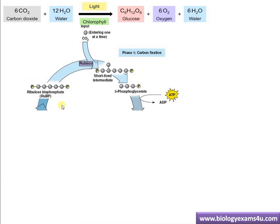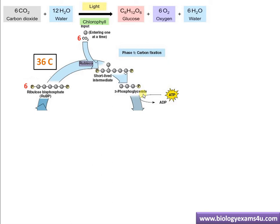Step one is carbon fixation. The initial substrate is ribulose bisphosphate (RuBP), a five-carbon compound with two phosphate groups. Using the equation: 6 CO₂ reacts with 6 RuBP in the presence of the enzyme RuBisCO — ribulose bisphosphate carboxylase oxygenase — which has CO₂ addition activity, hence called a carboxylase. The total number of carbons is 36: RuBP has 5 carbons, so 6 × 5 = 30, plus 6 carbons from CO₂, giving 36 carbons total. This forms a short-lived intermediate compound.